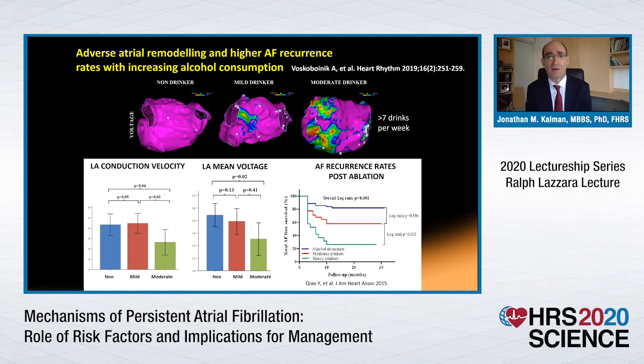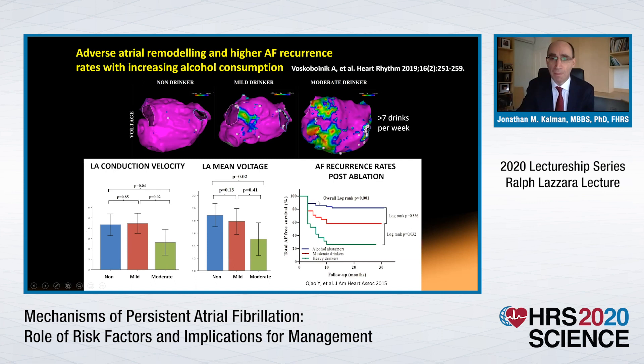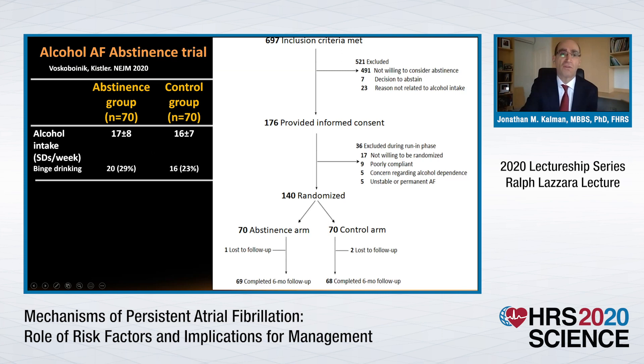Turning to alcohol — a topical area — a study looking at the impact of mild and moderate drinking, just seven drinks per week, on atrial remodelling found that even that level of drinking over the long term can impact atrial remodelling: conduction velocity slows and voltage falls. An observational study from a Chinese group found that moderate and heavy drinking translated into worse outcomes following AF ablation.